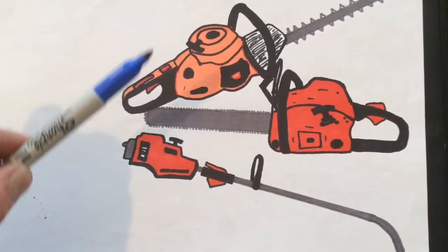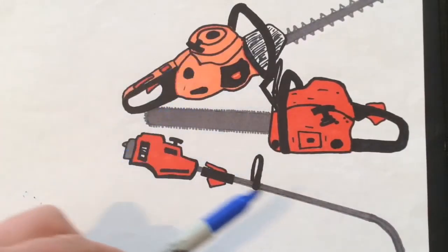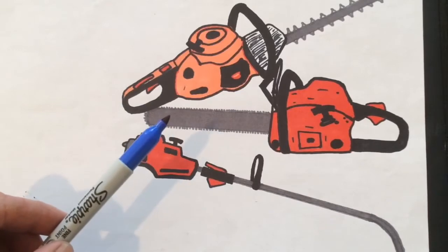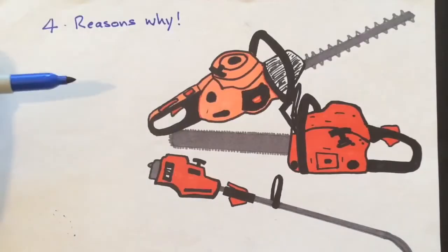Small engine driven garden machinery such as hedge cutters, chainsaws and strimmers normally have two-stroke engines fitted for a very good reason. And here I'm going to explain four good reasons why.